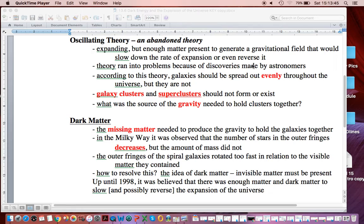In the Milky Way, it's observed that the number of stars in the outer fringes decreases. And yet the overall mass out there remains the same. So that means, yep, there's visible matter out there, but there is also this dark matter that had to be there to have the right amount of gravity.